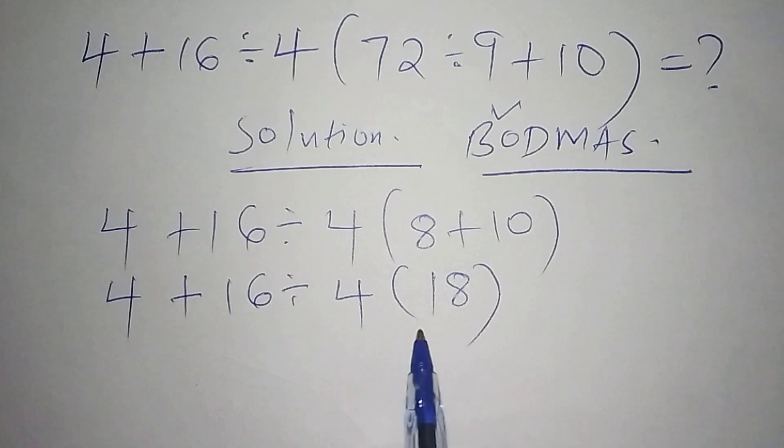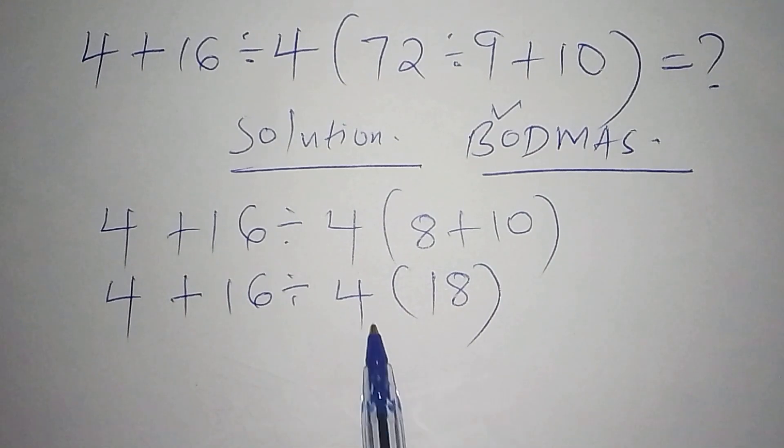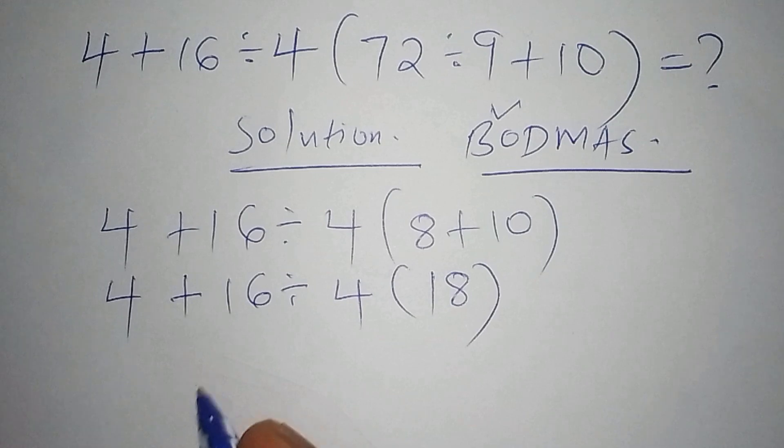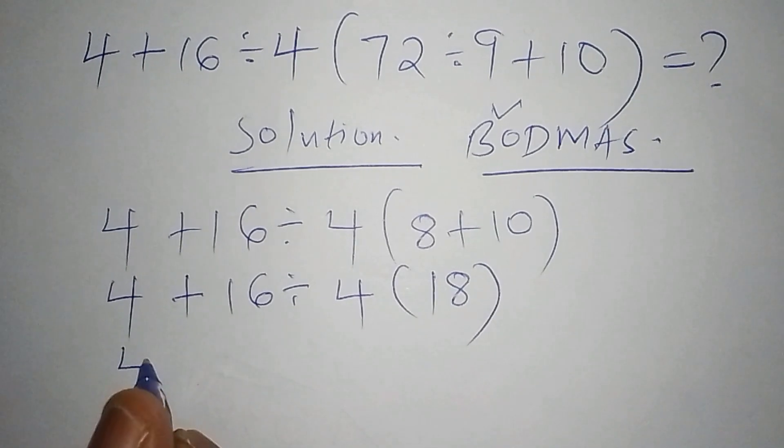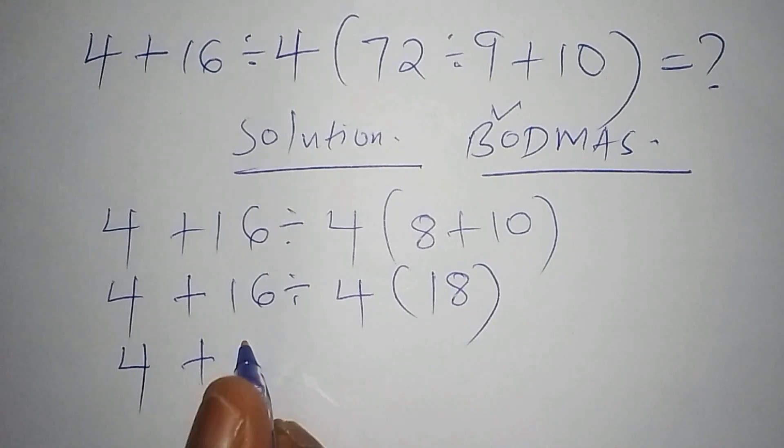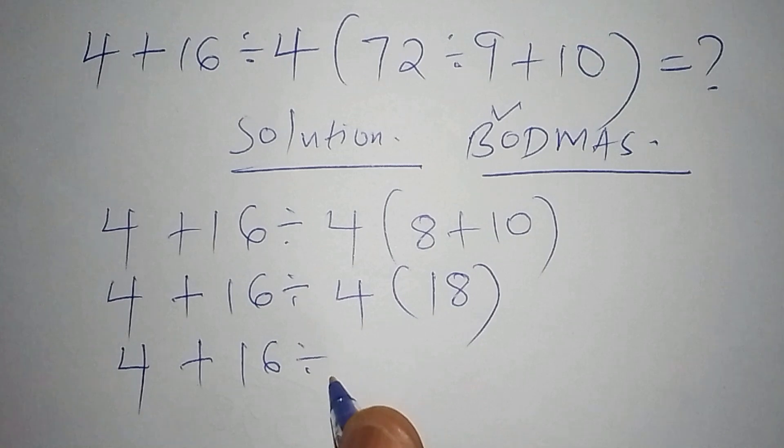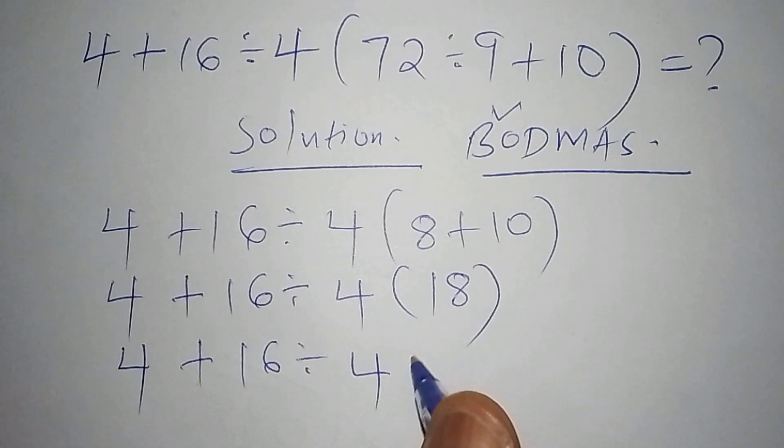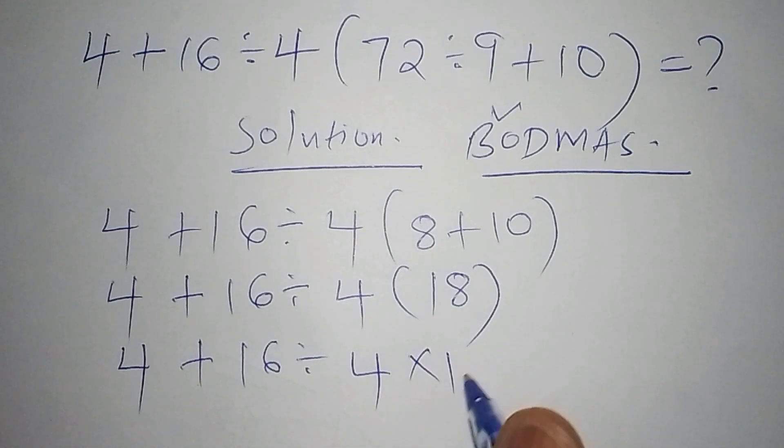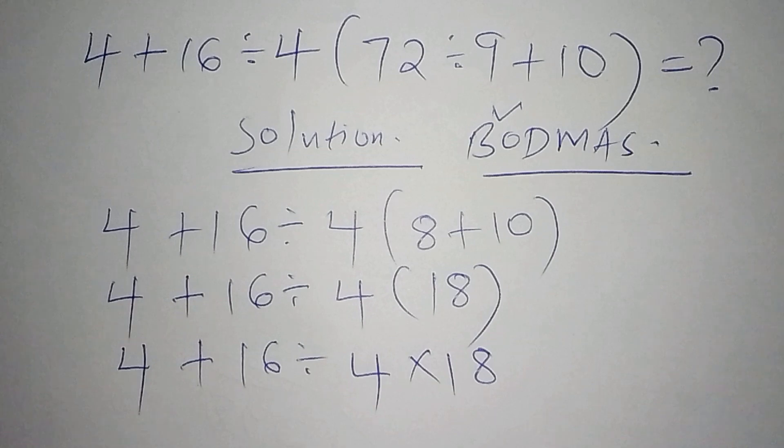The next step is to open the bracket. How do we open the bracket? By multiplying 4 by 18. So the next step shall be 4 + 16 ÷ 4, then we're opening the bracket, multiply by 18.